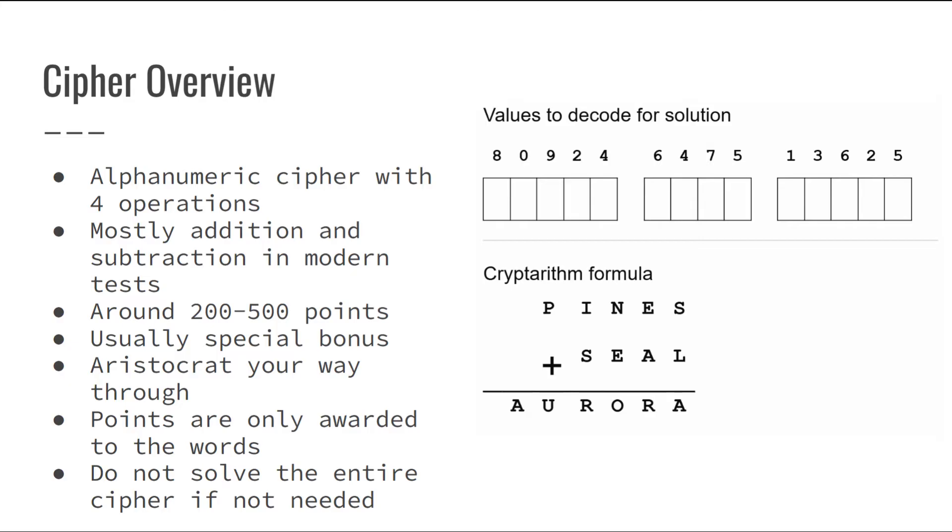You also don't need to be solving the entire cipher and you can instead just solve for the text it's asking you for since that is what gets you your points. This means that you don't need to put in a number for each of the letters and you can simply just solve through it instead.